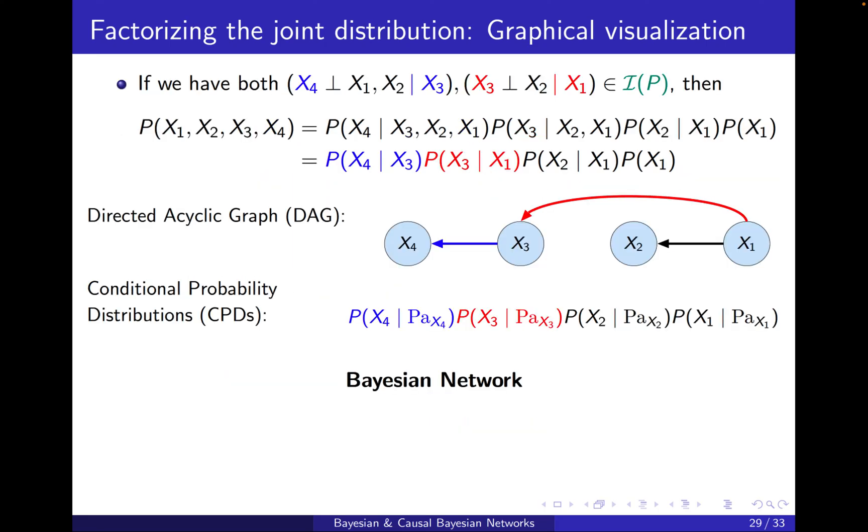The way that we introduced in the beginning was to call these conditioning parts the parents. It becomes more clear why we call them parents, because in the graph, really, x3 is the parent of x4. This is how the graph was built, but you see the connection to the naming here.